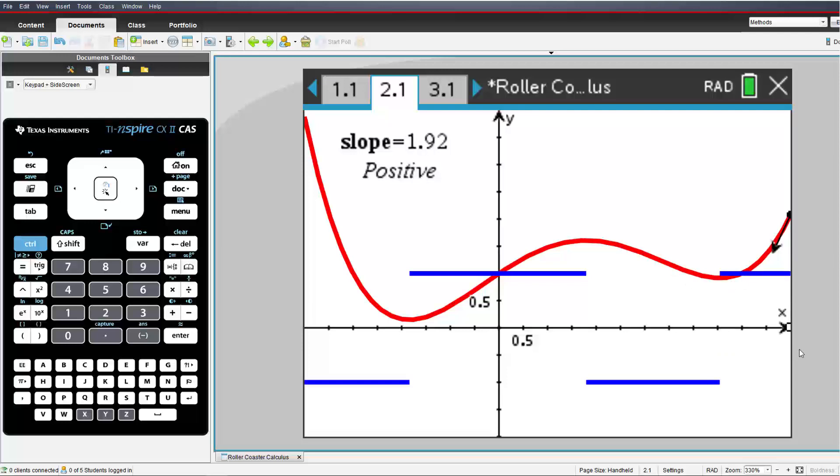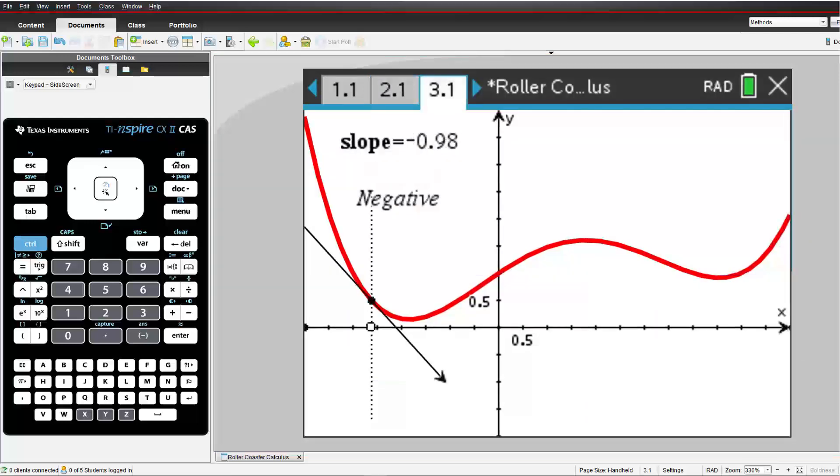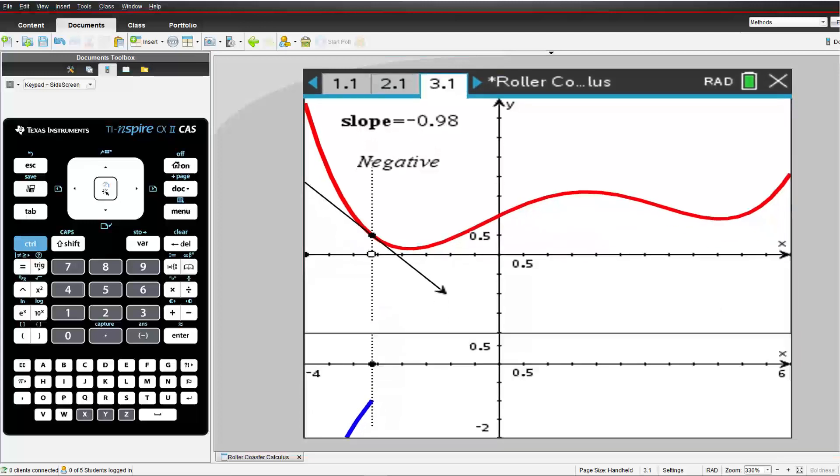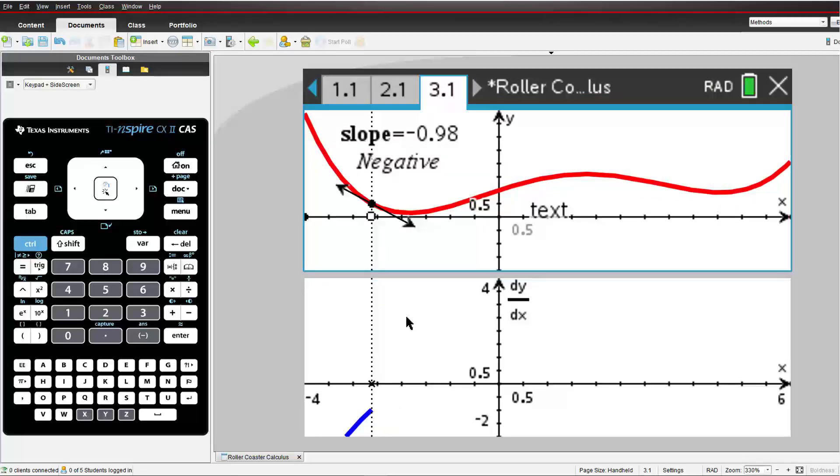Now it's time to draw the gradient information as a function. To avoid confusion, I'll split the screen and put the gradient information on a second graph. The gradient function provides more detail than negative, zero, and positive slope from our coaster ride and sign graph. It quantifies the slope, providing us with much more information about the original function.